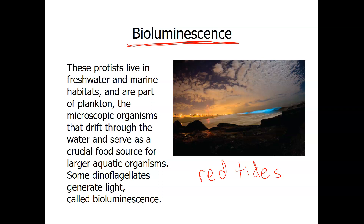The toxin builds up at a higher concentration as it moves up the food chain — for example, to a fish that eats clams. The toxin gets more concentrated the further up the food chain you go, so it would be more concentrated in the human than in the clam. Whenever red tides occur, they stop all fishing and shellfish harvesting.